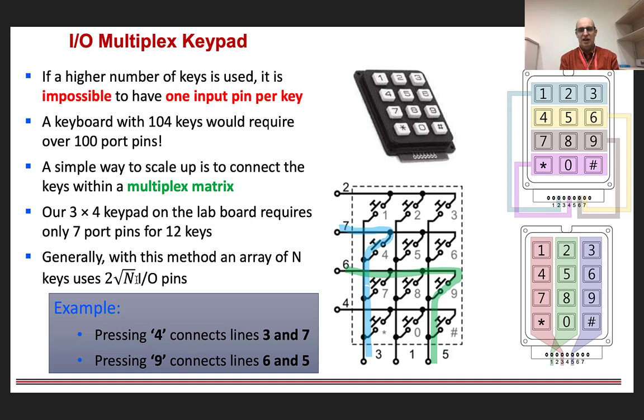On the other hand, if the 9 button is pressed, it shorts together the row 6 and the column 5. So that's logical, right? Let's see how we need to wire that up to actually use it.